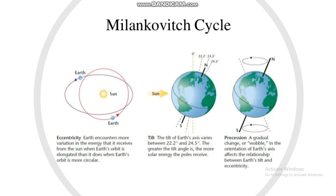Again, in the Milankovitch cycle, with eccentricity, the earth encounters more variation in the energy it receives from the sun when the earth's orbit is elongated than when the orbit is more circular, because there are times the earth is nearer to the sun. Regarding tilt, the earth's axis varies between 22.2 degrees and 24.5 degrees, and the greater the tilt angle, the more solar energy the poles receive.